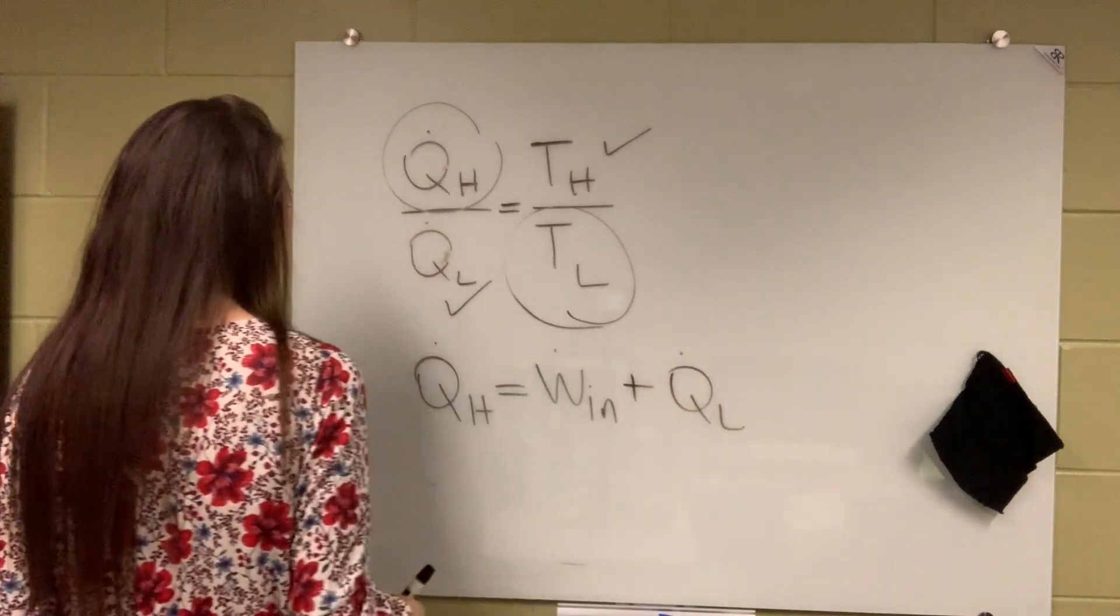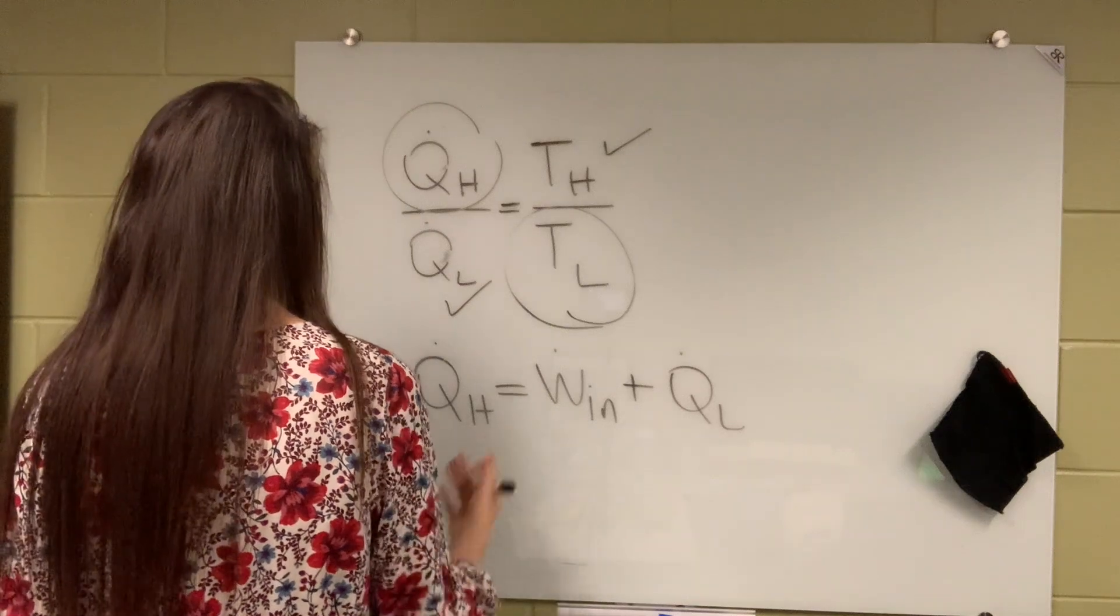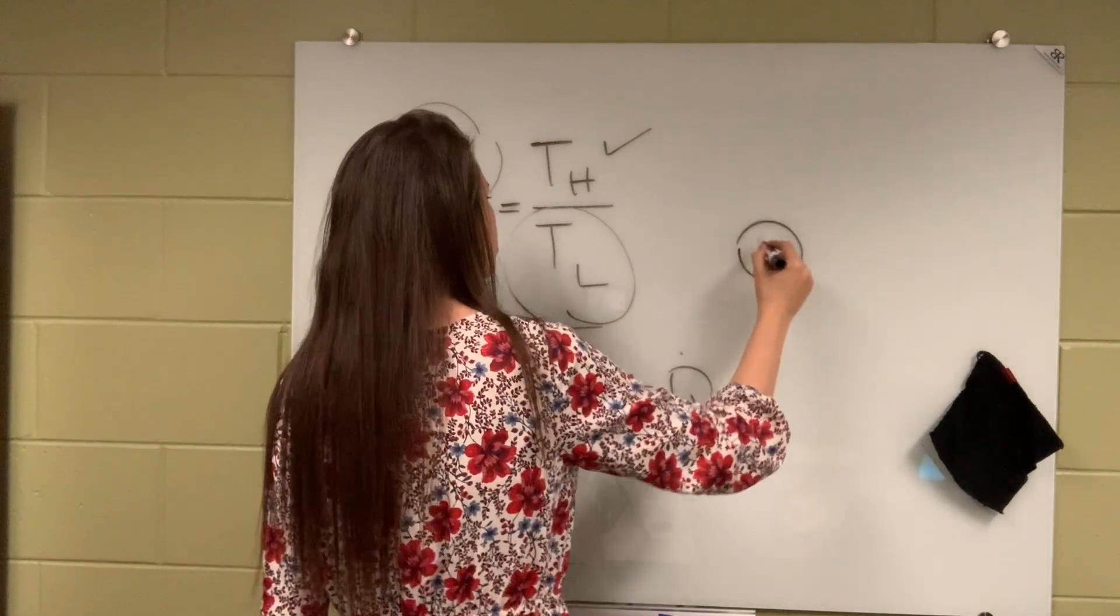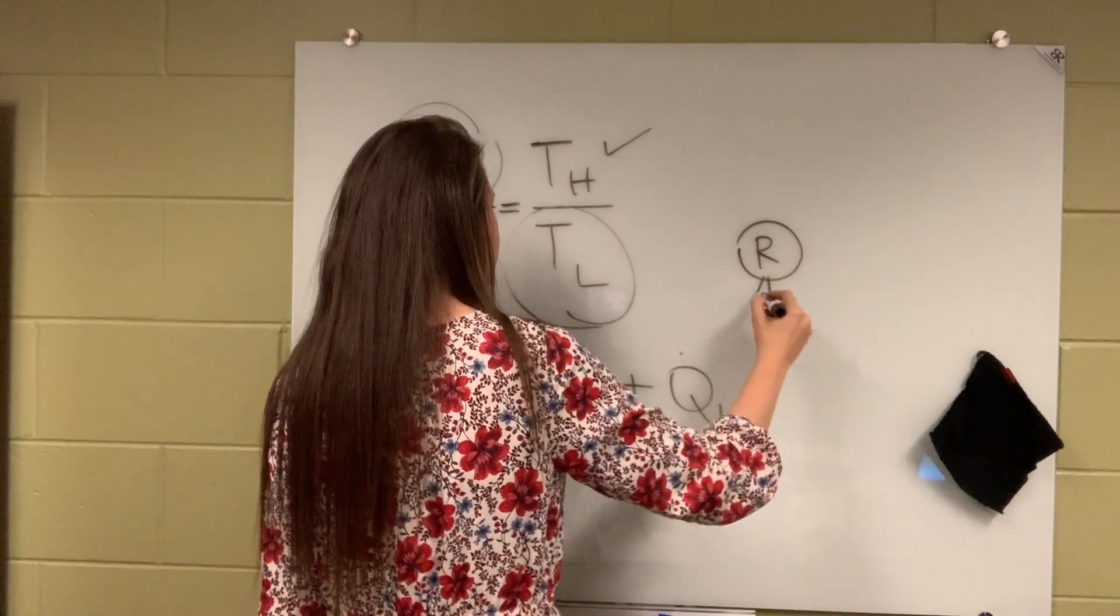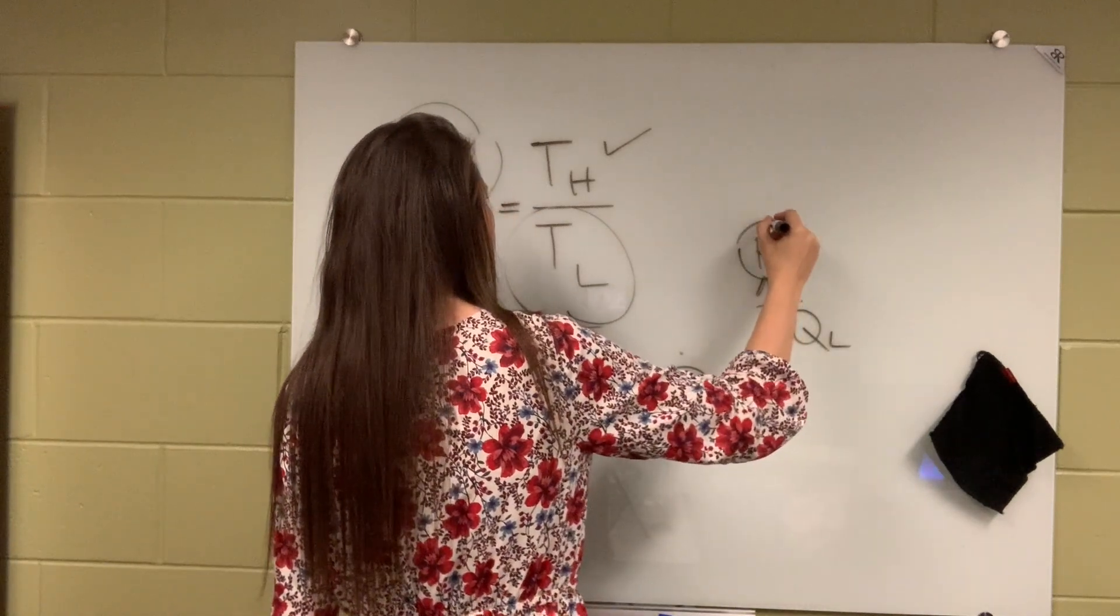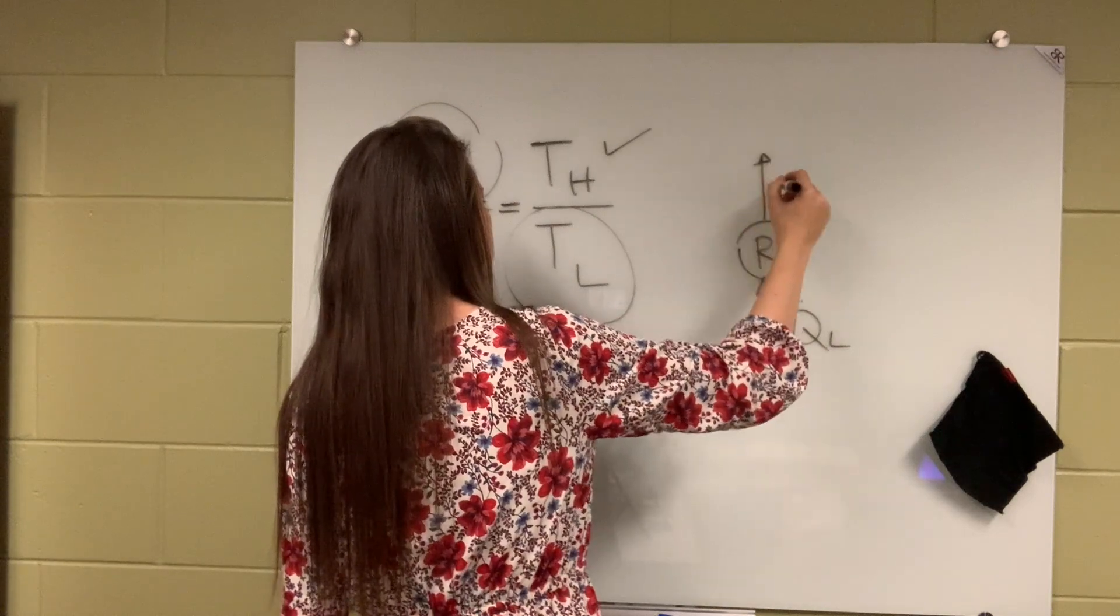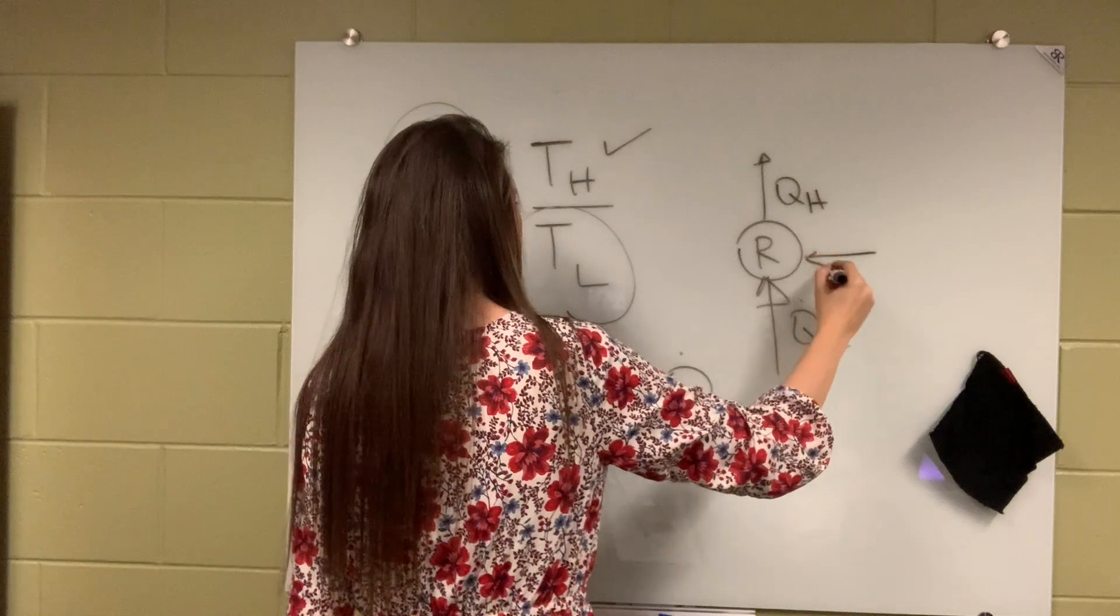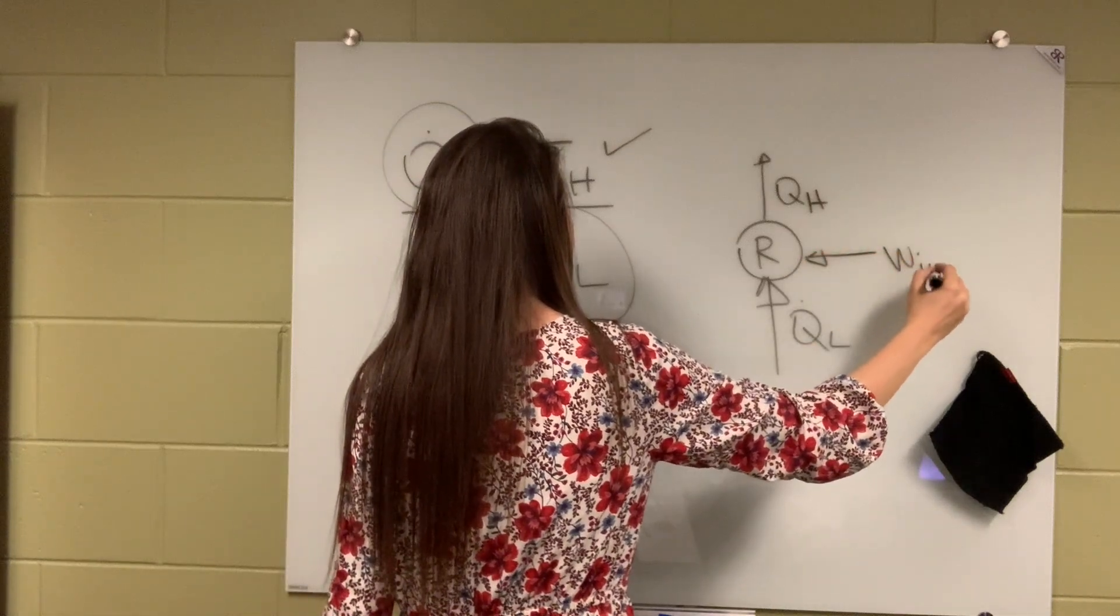So if you don't know this equation and you need to memorize it, you need to remember this. Okay, so you have your refrigerator. Heat comes in and goes to out and work input. Okay. So this is a closed system overall refrigerator.